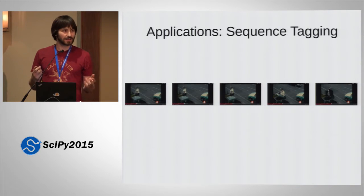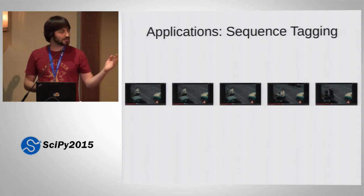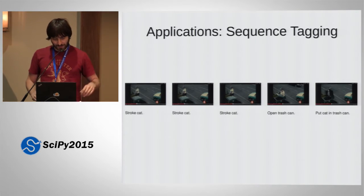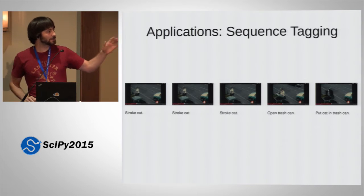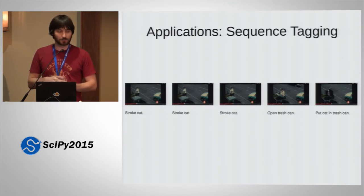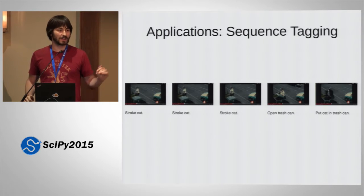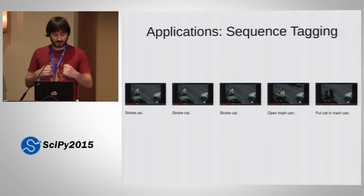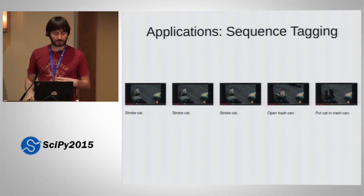Another application is sequence tagging. This is often used in text or maybe for video. These are some frames from a YouTube video, and let's say you want to predict the actions that are visible. Maybe you believe me that the first one is a woman stroking a cat, stroking a cat, stroking a cat, opening a trash can, and putting the cat in a trash can. For each frame you want to do multi-class classification — what is the person doing in this video frame. You could do this independently for each frame, but there's some correlation between consecutive frames. As a person is stroking a cat, they're very likely to keep stroking the cat. Models like hidden Markov models or conditional random fields broadly fall under structured prediction and try to solve this kind of problem.